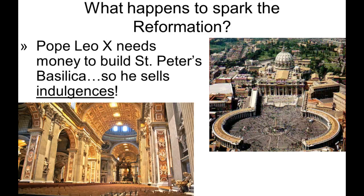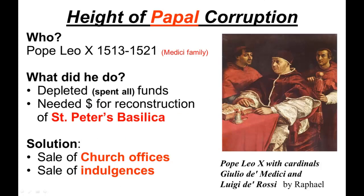This was really the height of papal corruption. You'll see Pope Leo X with his cardinals, Luigi de Rossi and Giulio de Medici. If you remember from our Renaissance classes, the Medici were a powerful family in Florence — Pope Leo was one of four Medici popes. This painting was done by Raphael. To solve his money problem, Pope Leo sold church offices. Somebody wanted to be a cardinal, he said give me money and they were a cardinal. Did they have to be educated or follow the rules? No — it was the powerful families that bought these church offices.